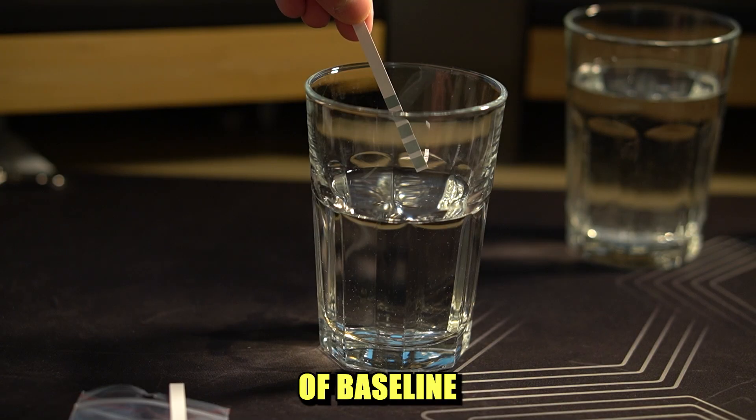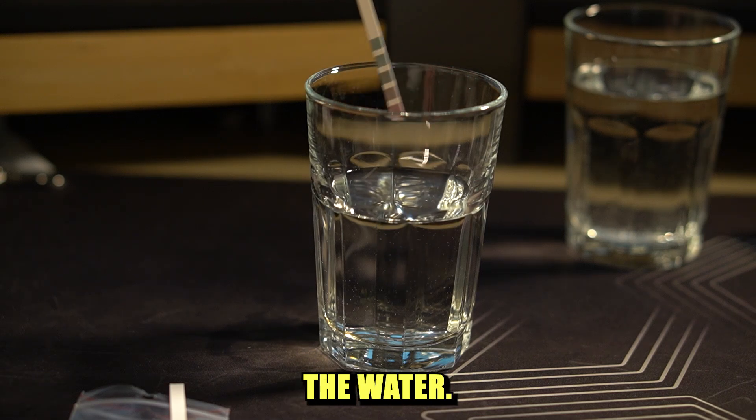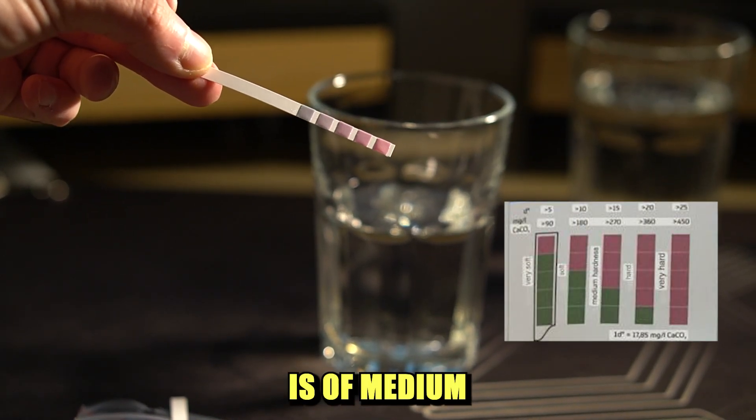Okay, here is the result of the test of baseline water. The more green on this strip, the softer the water. As you can see, in my case, the water is of medium hardness.